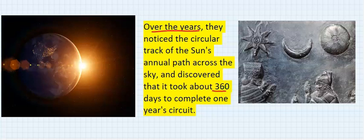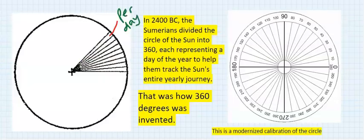They discovered that it took about 360 days to complete one year's circuit. In 2400 BC, the Sumerians divided the circle of the sun into 360, each representing a day of the year to help them track the sun's entire yearly journey. That was how 360 degrees was invented.